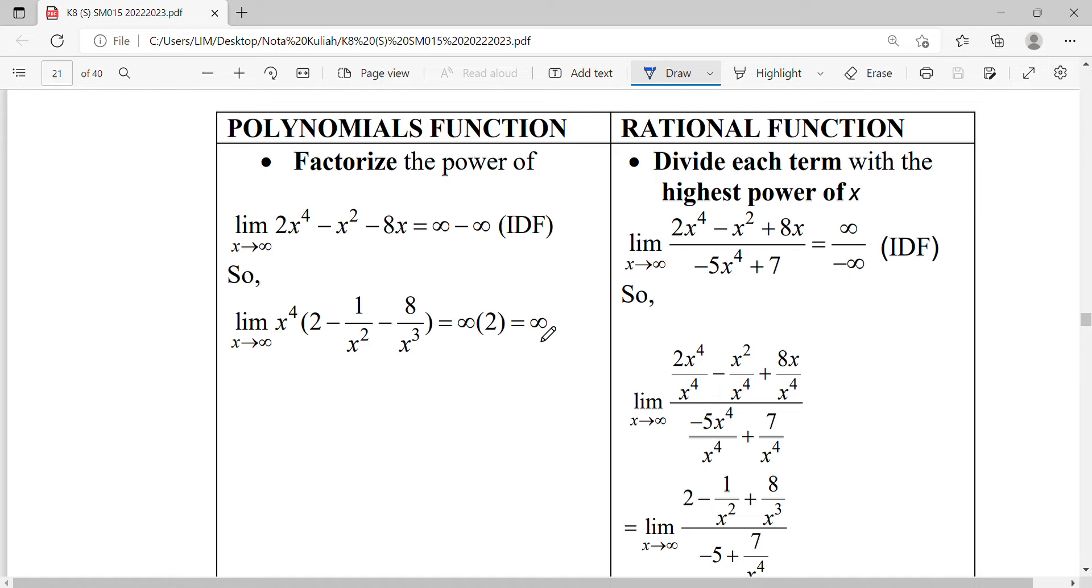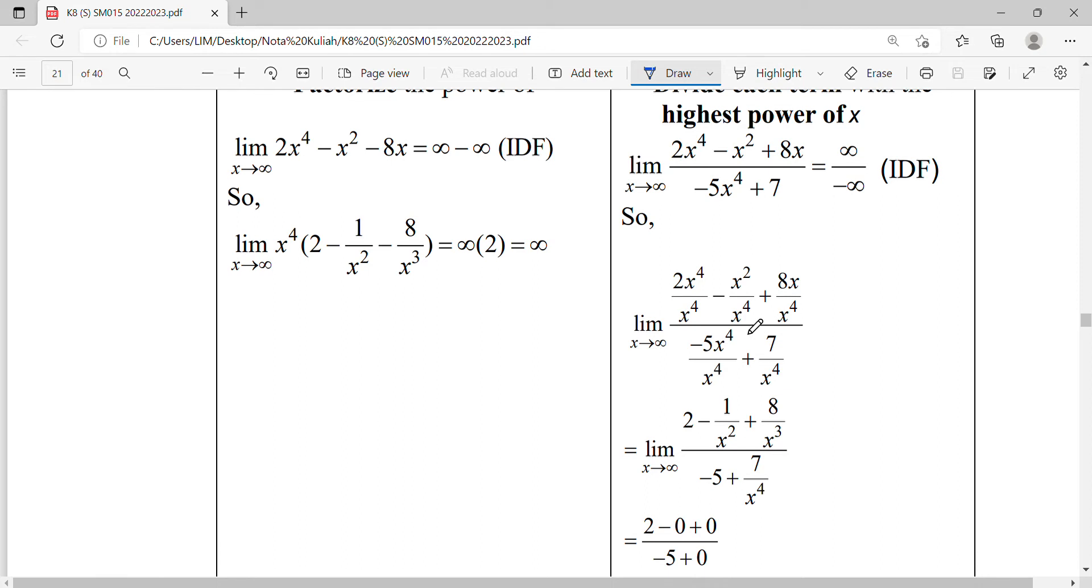Normally for functions involving rationals, we divide by the highest power of x. In this rational function, the highest power of x is x to the fourth. For each term, we divide by x to the fourth. Then we simplify this function to get 2 minus 1 over x squared.